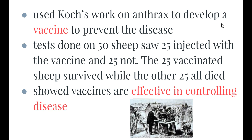He also used Robert Koch's work on anthrax to develop a vaccine for that disease. To test it, he collected 50 sheep, injected 25 with the vaccine, and left 25 unvaccinated. He then subjected all 50 sheep to the anthrax bacteria, and found that the 25 vaccinated sheep survived while the 25 unvaccinated sheep died.